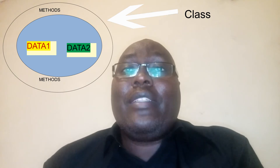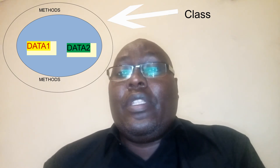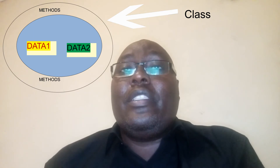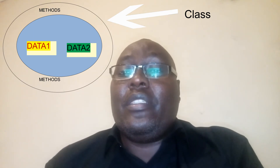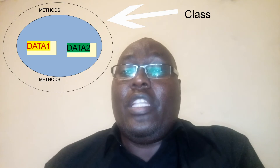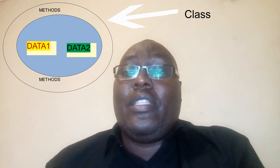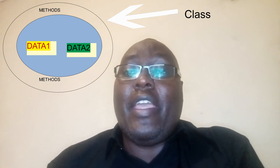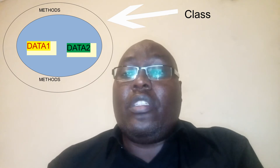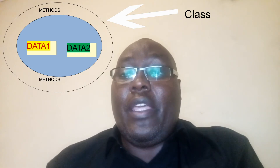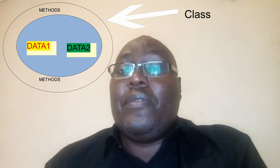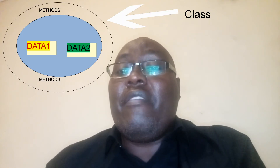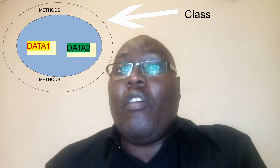A class, therefore, can be seen or looked at as a template of the object. It's from the class that we create objects. So the class defines what the object should look like, defining the attributes and the behavior of the object.